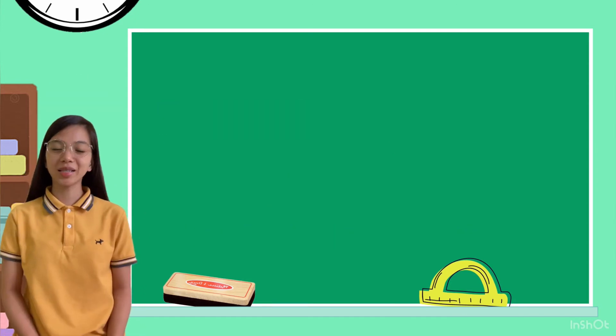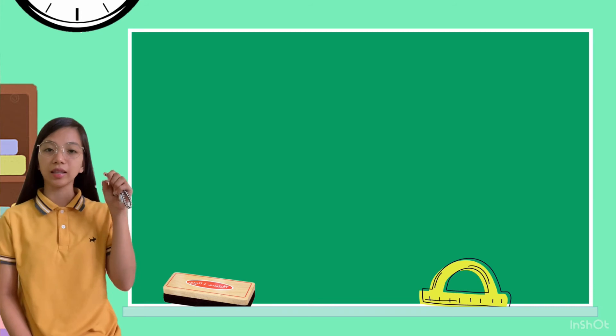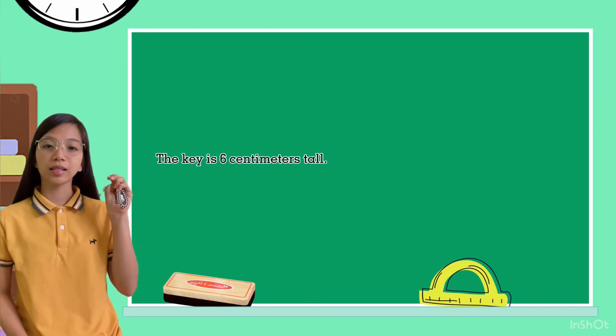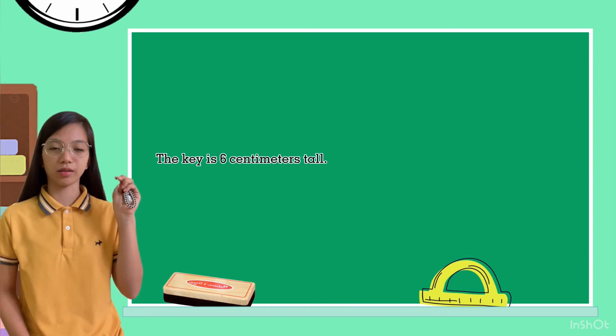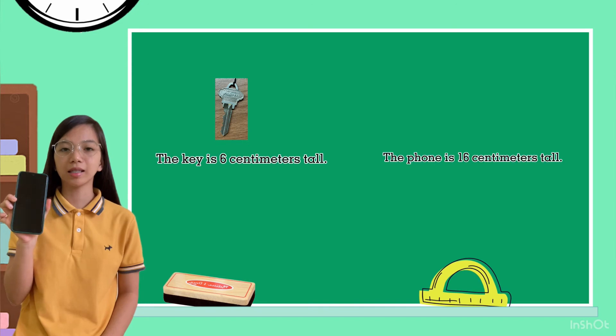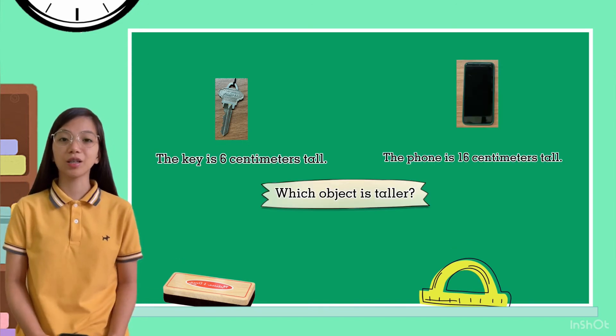Another example, we are going to compare the height of the key and then the height of the phone. The key is 6 centimeters. And then, the phone is 16 centimeters. Which object is taller?